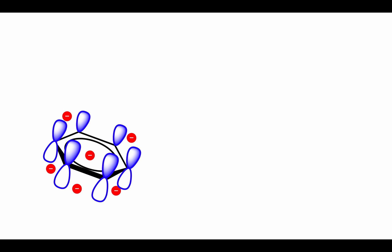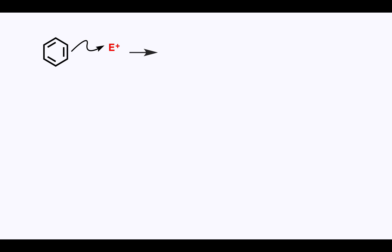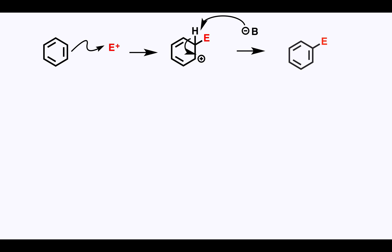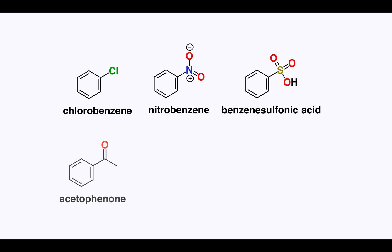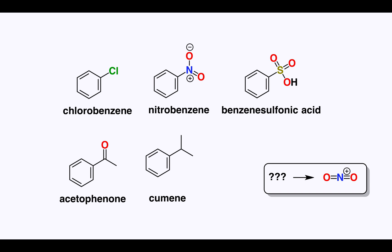Benzene is a relatively stable molecule. However, when it encounters a powerful enough electrophile, it will undergo electrophilic aromatic substitution. We've also seen the five major benzene derivatives that we can form by reactions with different electrophiles. But we haven't yet looked at how those electrophiles are made and the conditions under which these reactions occur — we'll do that in a specific lesson for each reaction.